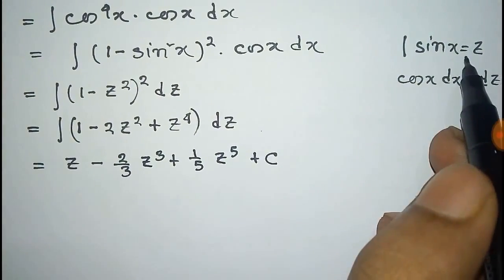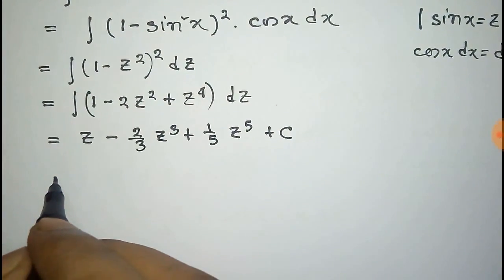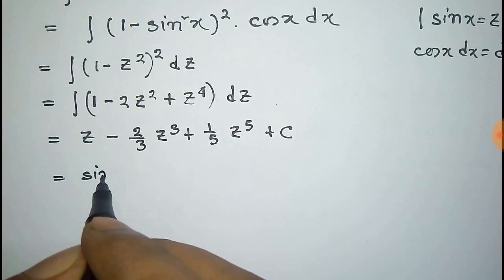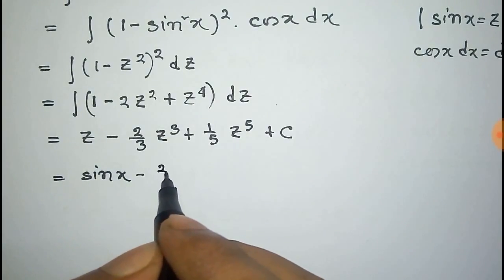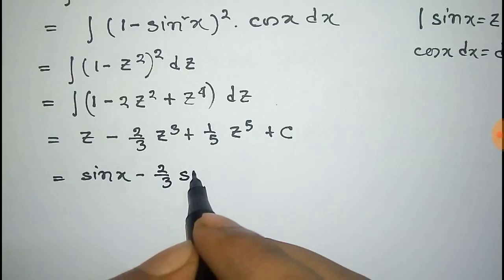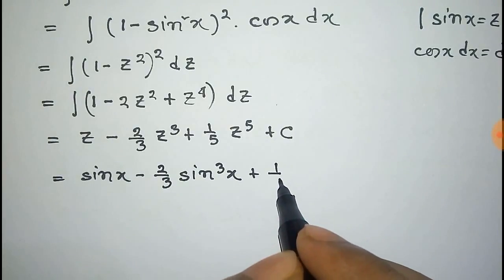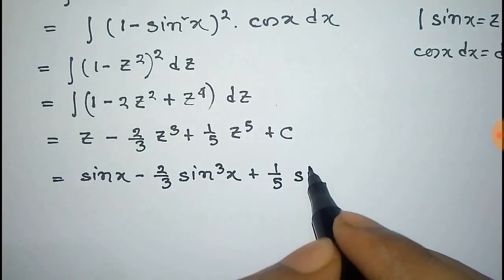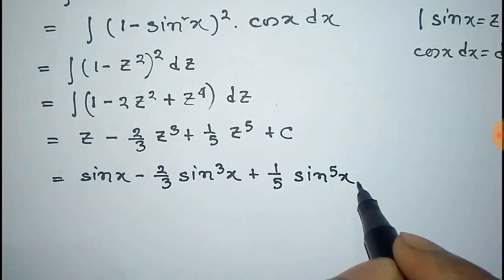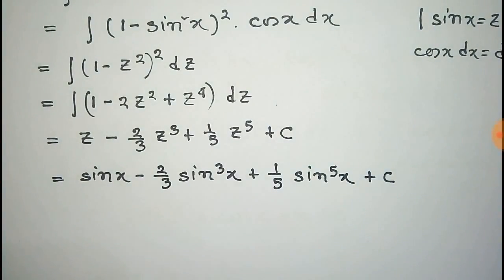Now we have to put the value of z that is sin x minus 2 by 3 sin cube x plus 1 by 5 sin to the power 5x plus constant c. Thus we can integrate cos to the power 5x in this process.